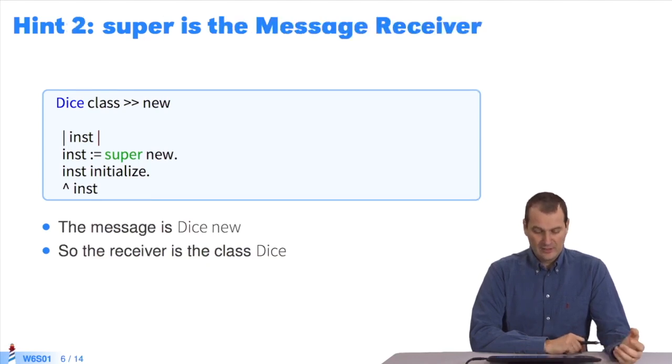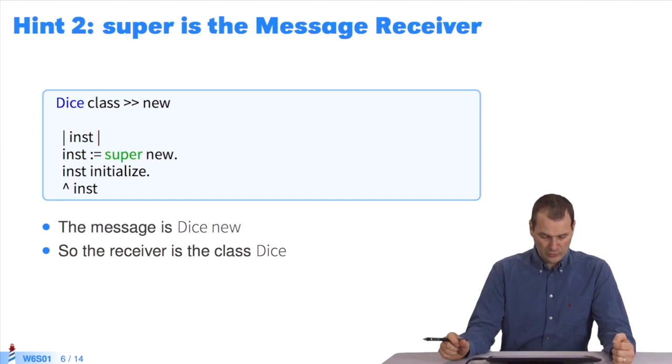Let's take a look. We said in the video on super that super was the receiver of the message. Like self, super points out the receiver of the message. This is not specific to Pharo. It's true in all object-oriented languages, such as Java, C-sharp, and Smalltalk.